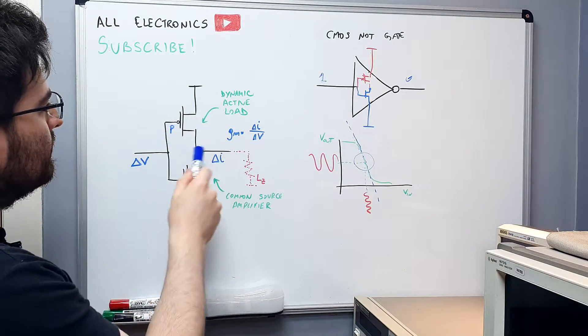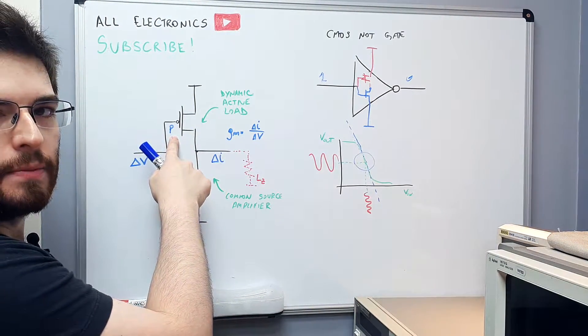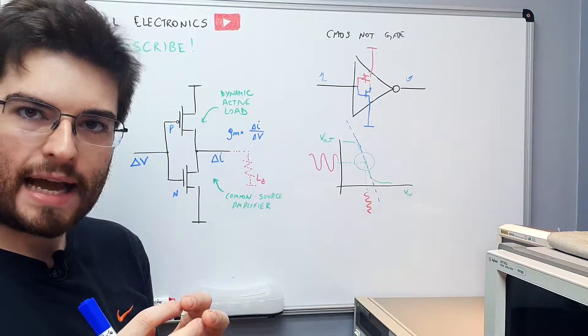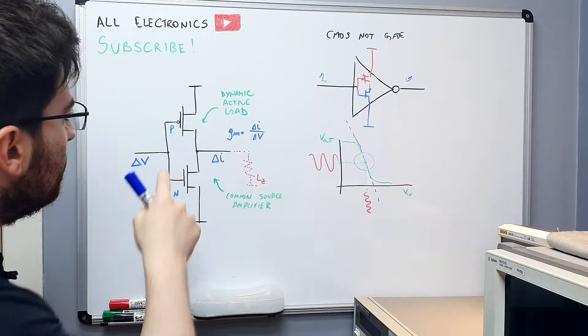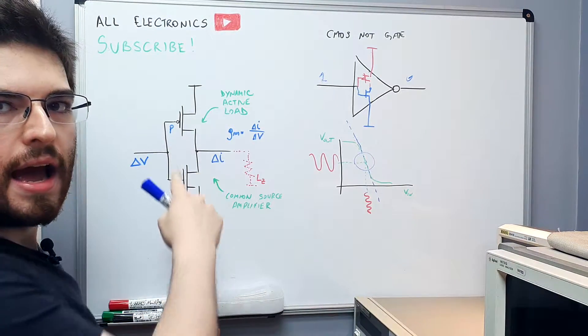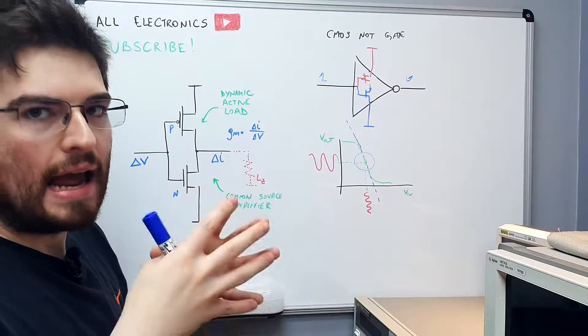When we put the P device here, it's like a resistor that is also changing its resistance. We can see the PMOS device as a dynamic active load.